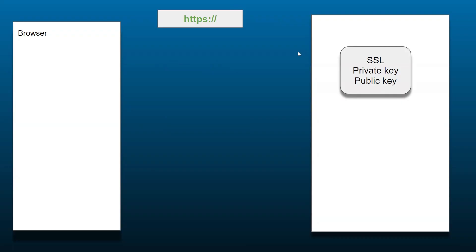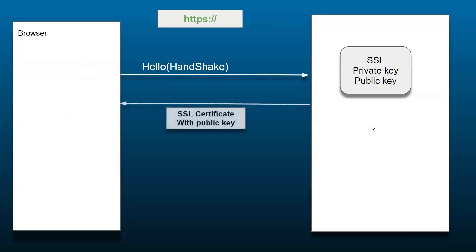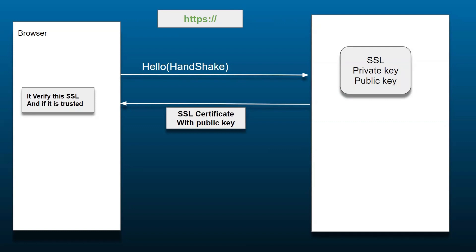After configuration of the SSL certificate, the browser initiates a handshake — a hello from the browser to the server. Once that handshake is done, the server sends the SSL certificate to the browser, but this certificate contains only the public key, not the private key. The browser then receives that certificate and public key and validates whether it is a trusted certificate or not.